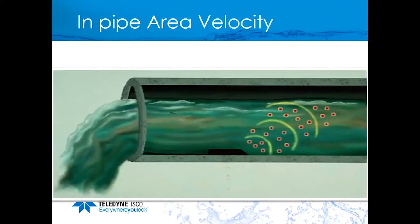An in-pipe area velocity sensor has a pressure transducer to read water depth, giving the wetted cross-sectional area. It transmits a 500 kHz signal into the flow stream and reads the Doppler shift from particles and air bubbles in the water to determine velocity.